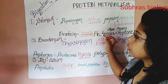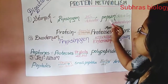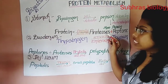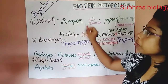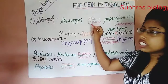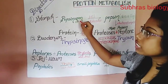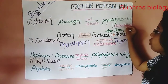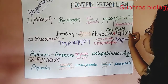First, protein is digested in the stomach. In the gastric juice, hydrochloric acid (HCl) is secreted, which acts upon pepsinogen. Pepsinogen is the pro-enzyme present in the stomach, and HCl activates this pepsinogen to form pepsin, which is the active enzyme. Through autocatalysis, more pepsin is formed.